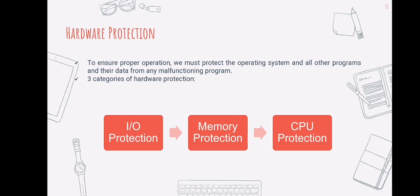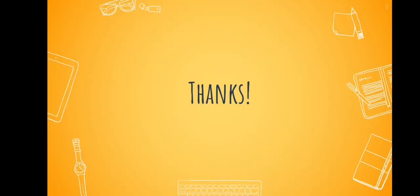Next and lastly, we have CPU protection, or central processing unit protection. We must ensure that the operating system maintains control in order to protect input-output and memory. We must prevent a user program from becoming trapped in an infinite loop or failing to call system services, resulting in the operating system losing control. We can utilize a timer to achieve this purpose. A timer can be used to interrupt the computer after a certain amount of time has passed. The duration might be either fixed or variable. A fixed-rate clock and a counter are commonly used to build a variable timer. And that's it for this discussion. Thanks for listening.